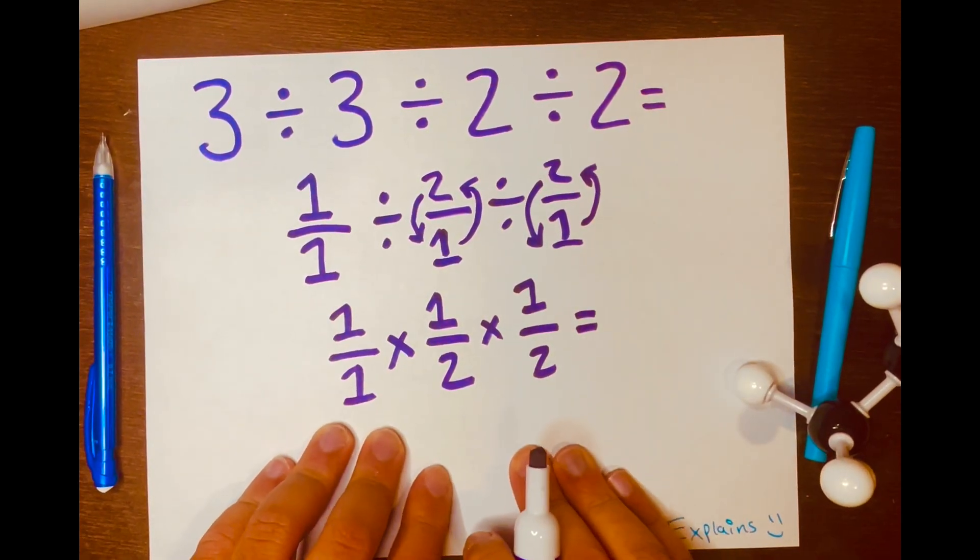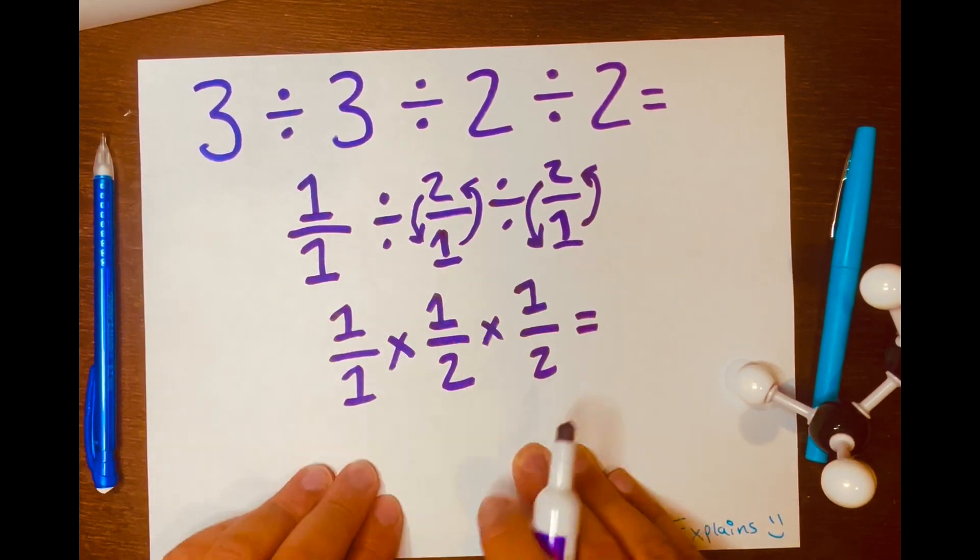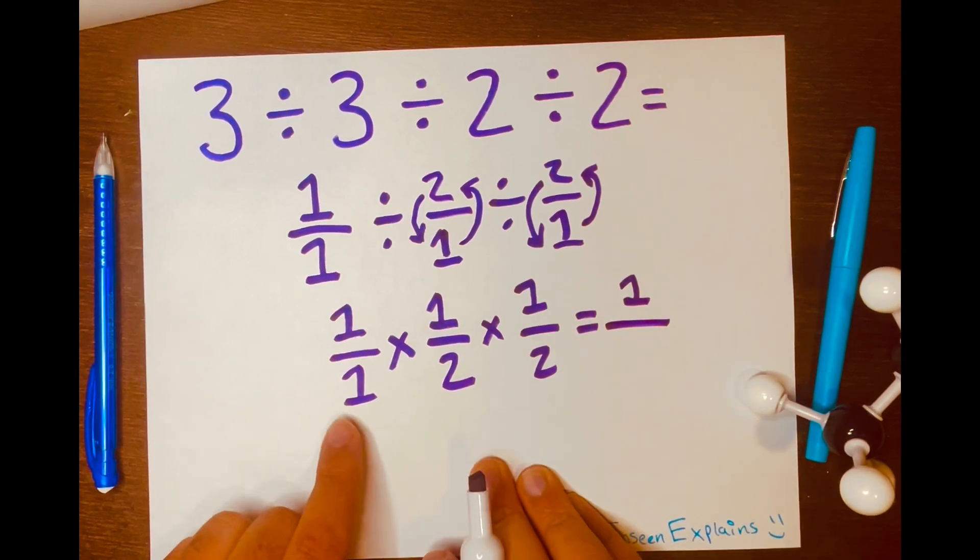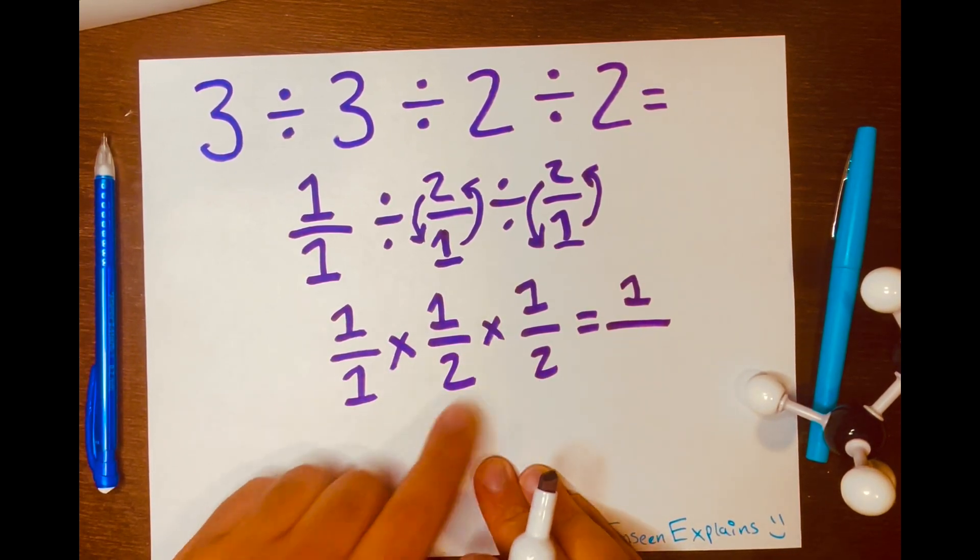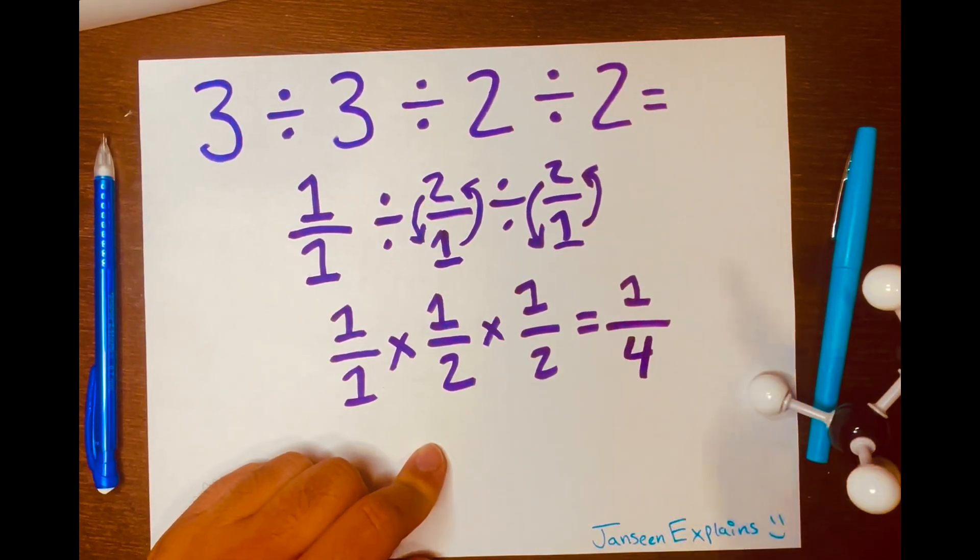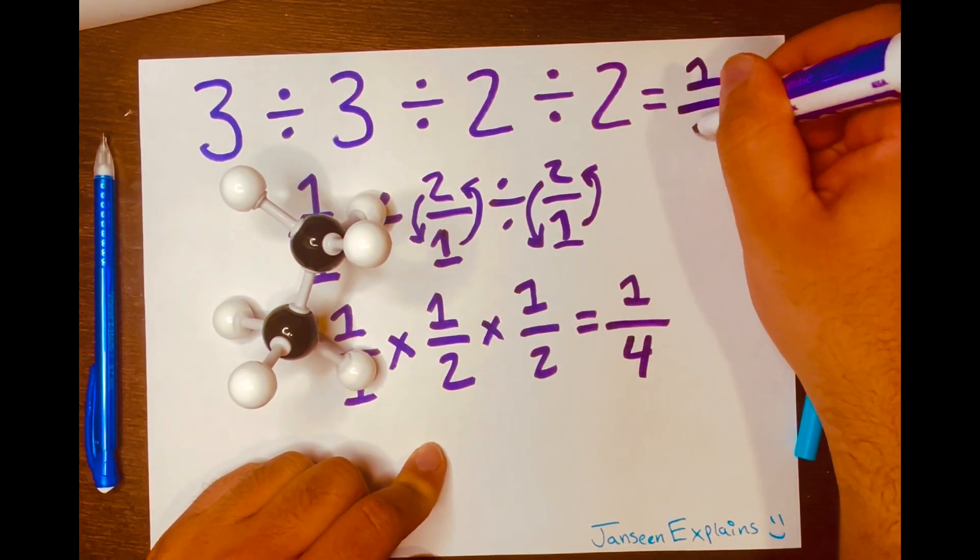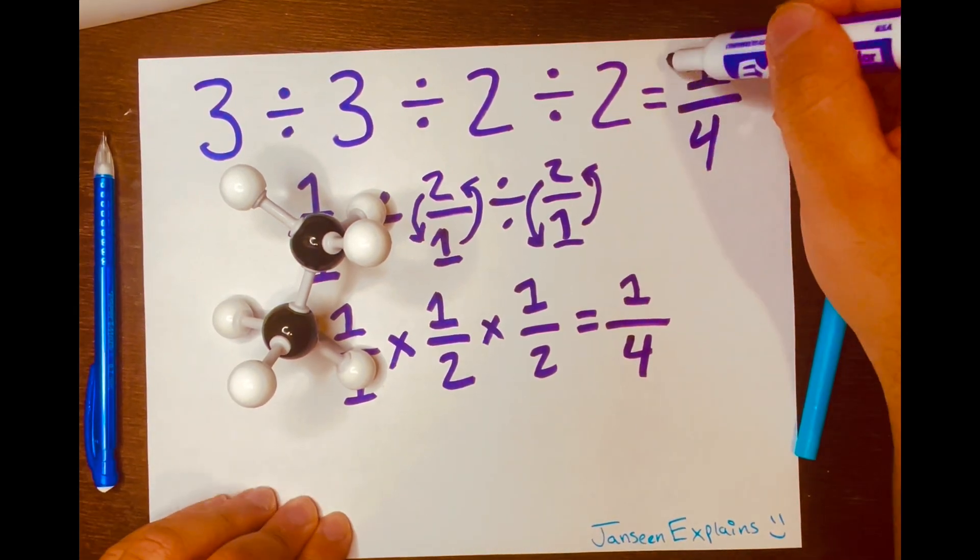And then just multiply across. So 1 times 1 times 1 is 1. And over 1 times 2 times 2 is 4. So your answer is 1 over 4. 1 over 4. And there you go.